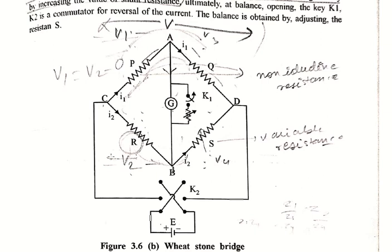In the Wheatstone bridge, R is the unknown resistance and S is a standard variable resistance whose value is known or can be varied. The values of P and Q are chosen so that the calculation becomes easier — we take P and Q in the range of 1, 10, 100, 1000, so the ratio P/Q will be like 1000, 100, 10, 1, 0.1, or similar. G is a sensitive DC galvanometer with its shunt.